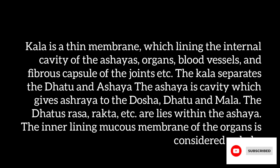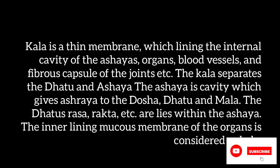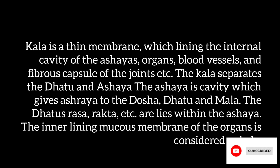Kala is a thin membrane which lines the internal cavity of the ashyas, organs, blood vessels, and fibrous capsule of the joints, etc. The kala separates the dhatu and ashyaya. The ashyaya is a cavity which gives space to the dosha, dhatu and mala.